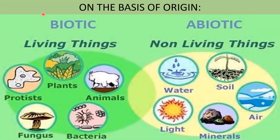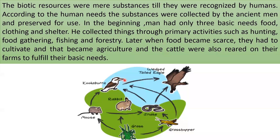Bio means life. So all living things on the earth are considered as biotic resources, and all non-living things are called as abiotic resources. The biotic resources were mere substances till they were recognized by humans. According to human needs, substances were collected by ancient men and preserved for use. In the beginning, man had only three basic needs: food, clothing, and shelter. He collected things from nature through primary activities like woodcutting, fishing, hunting, food gathering, etc. Later, when food became scarce, they had to cultivate, and that became farming and agriculture, and cattle were also raised on their farms to fulfill basic needs.